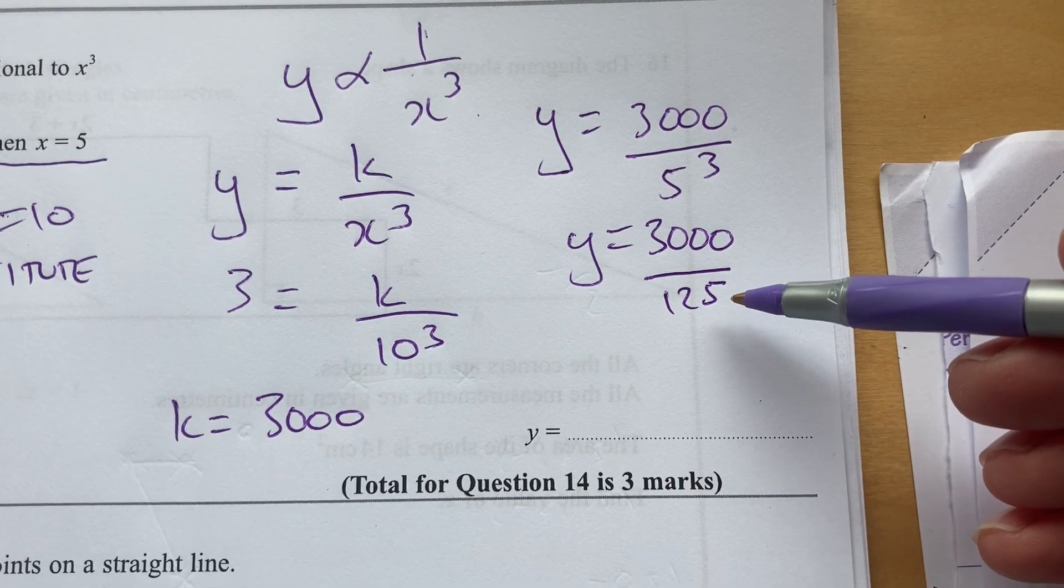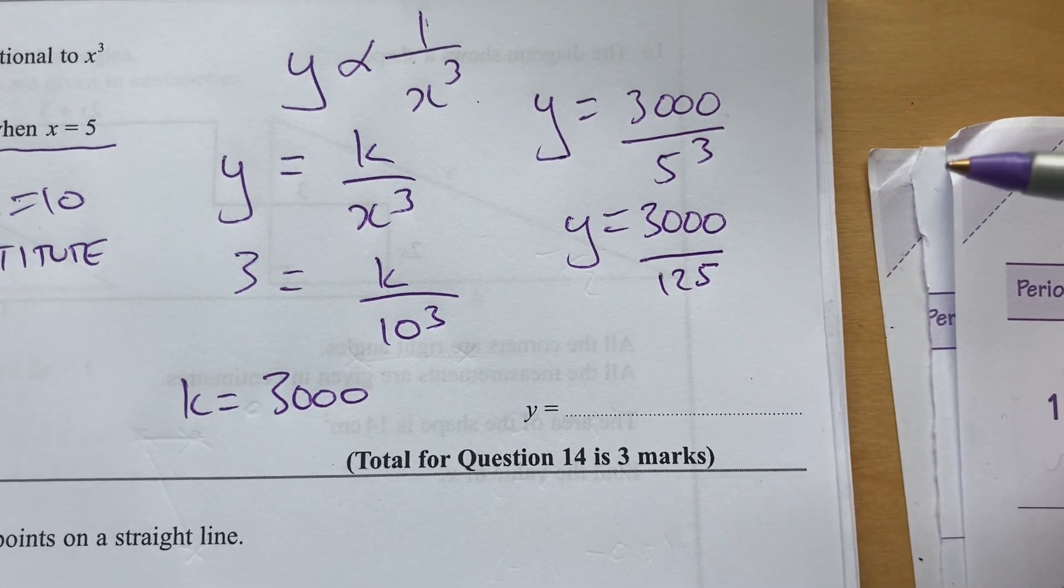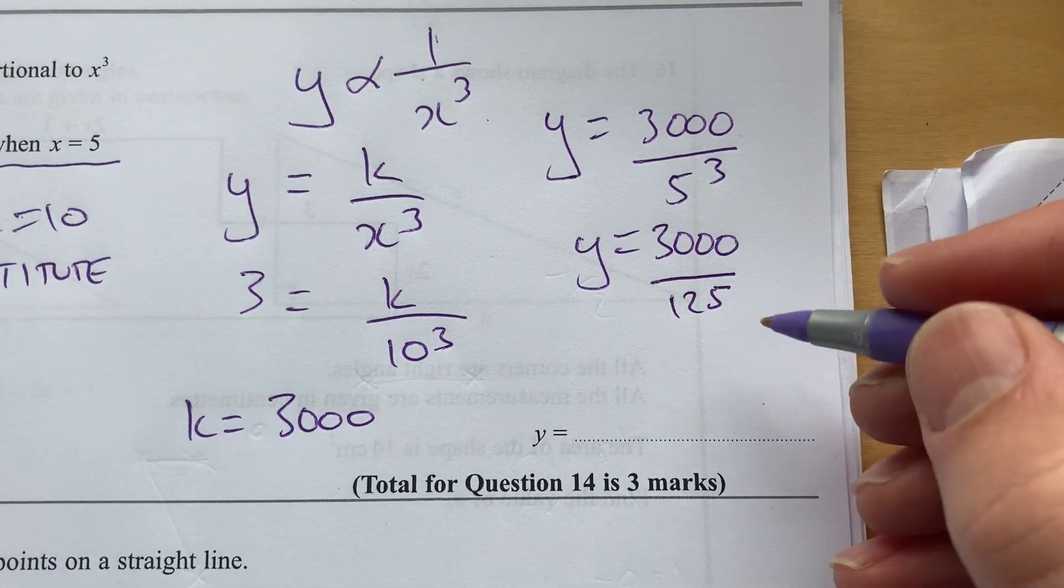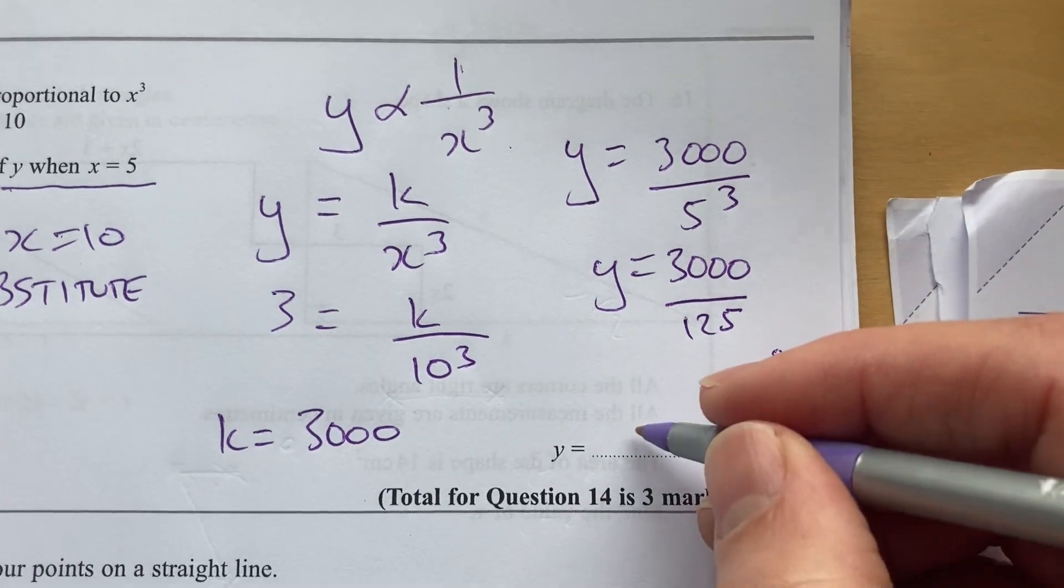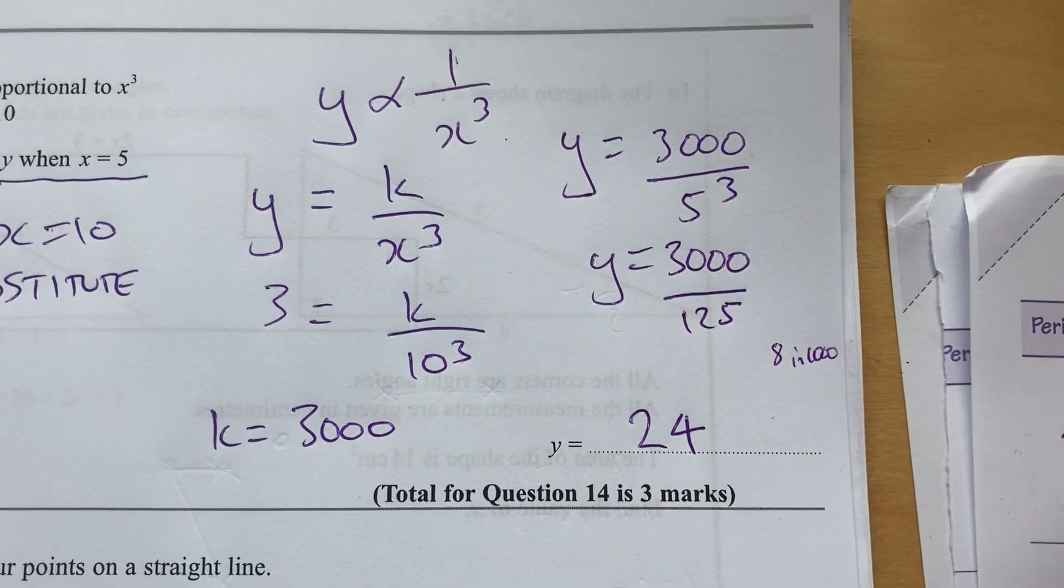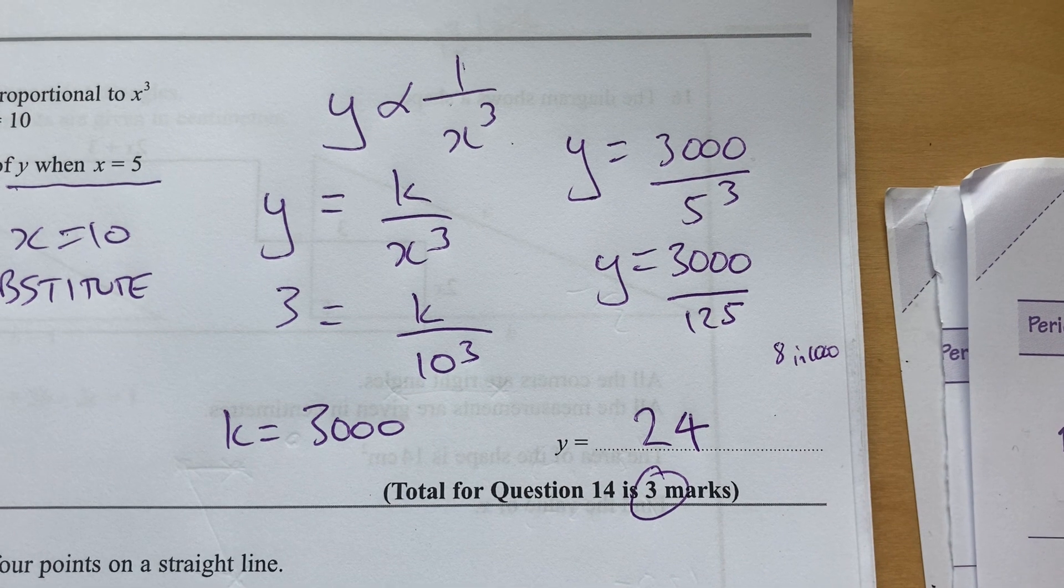You should have to think through how many times that would be. I know 125 times 2 would be 250. Times that by 4 would be 1000. So it's 8 in 1000. So it'll be 24 in 3000. Okay, and that's at three marks there.